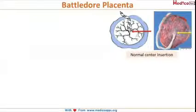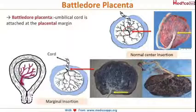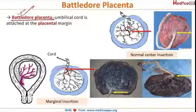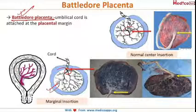As we can see in this diagram, there is central insertion of the umbilical cord. Now if this umbilical cord is inserted on the margins of the placenta, as we can see in this diagram, then it is called a battledore placenta. It derives its name from a game like badminton which uses a racket, and this insertion of the placenta makes it resemble that racket.